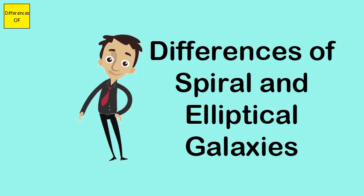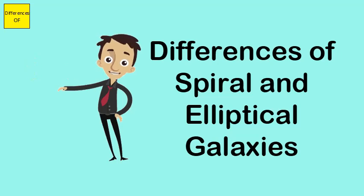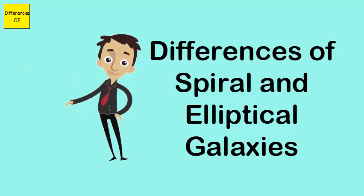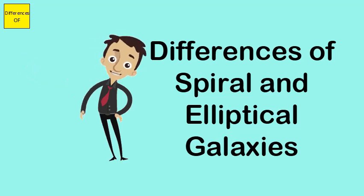The diameter of spiral galaxies can vary from 5 kiloparsecs to 250 kiloparsecs. The diameter of an elliptical galaxy may range from 1 kiloparsec to 200 kiloparsecs.